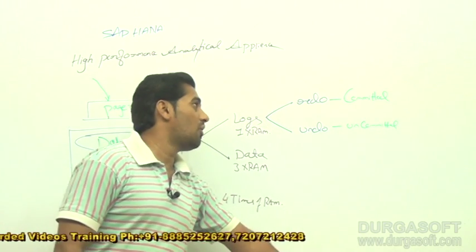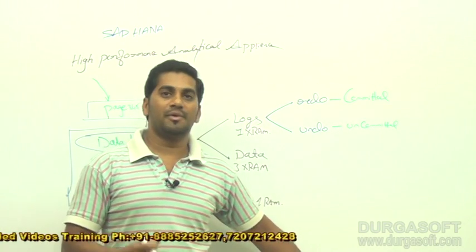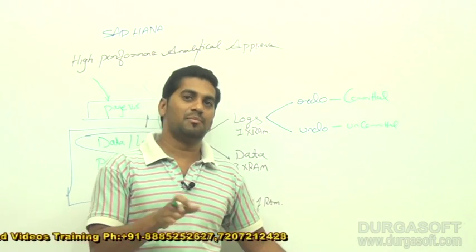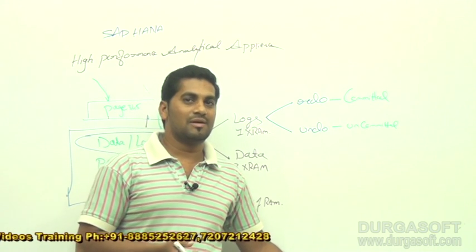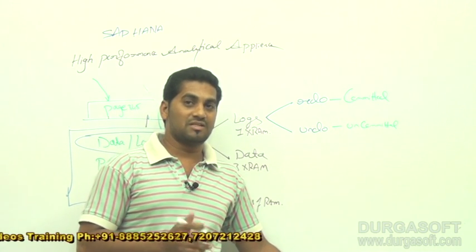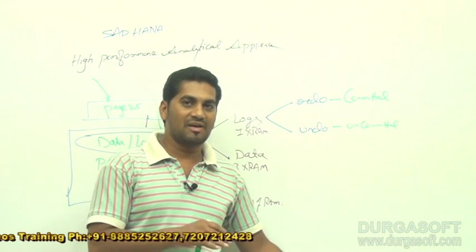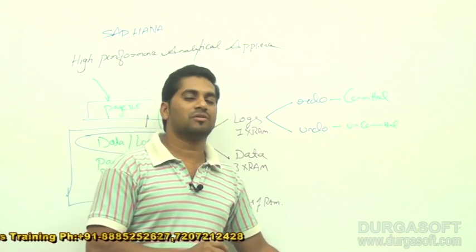Redo logs always store committed records — once the transaction is completed, then we can say it is a redo log. Once the transaction is not committed, then you can say those are uncommitted records stored in undo logs.